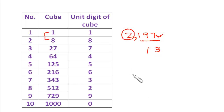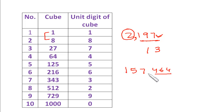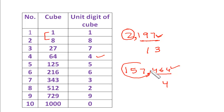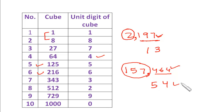Let's take one more number: 157464. Making sets of three digits gives '157' and '464'. The unit digit is 4, so the cube root also has unit digit 4. Now 157 lies between the cubes of 5 and 6 — that is, between 125 and 216 — so the tens digit of the cube root is 5. Therefore the cube root of 157464 is 54.